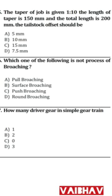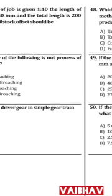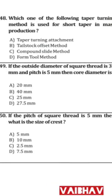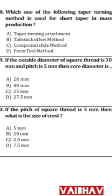Question 48: Which taper turning method is used for short tapers in mass production? The answer is D — form tool method. Question 49: If the diameter of a square thread is 30 mm and pitch is 5 mm, then the core diameter is 27.5 mm. Question 50: If the pitch of a square thread is 5 mm, then the crest width is 2.5 mm.